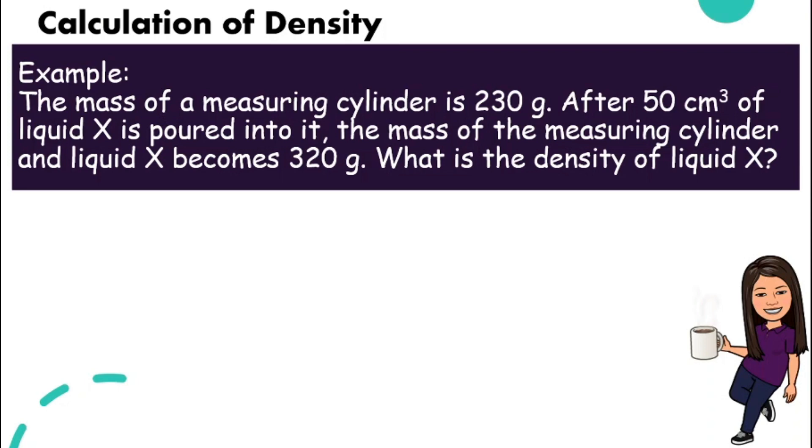It's already 230 grams. After 50 centimeter cubed of liquid X is poured into it, the mass of the measuring cylinder and the liquid X becomes 320 grams. What is the density of the liquid X? When we get a question like this, first, you need to identify what the question wants.